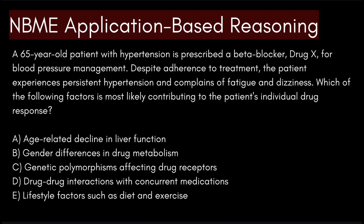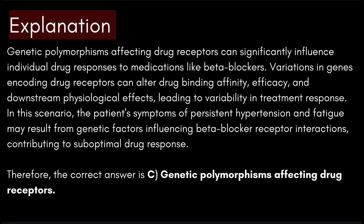Genetic polymorphisms affect drug receptors, which can significantly influence individual drug responses to medications like beta blockers. Variations in genes encoding drug receptors can alter drug binding affinity, efficacy, and downstream physiological effects, leading to variability in treatment response. In this scenario, the patient's symptoms of persistent hypertension and fatigue may result from genetic factors influencing beta blocker receptor interactions, contributing to a suboptimal drug response. The correct answer is C — genetic polymorphisms affecting drug receptors.